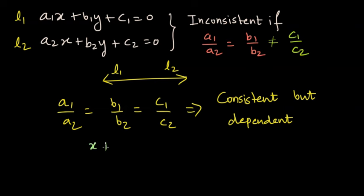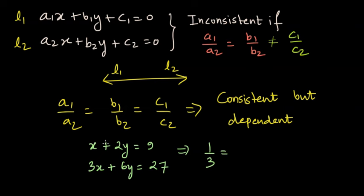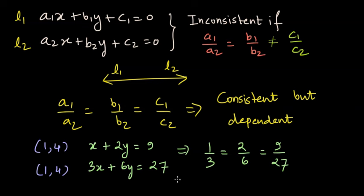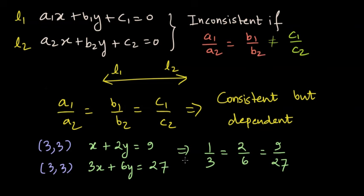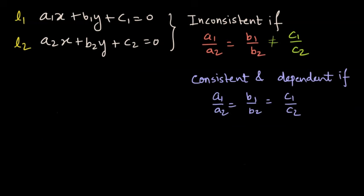For example, if one line is x plus 2y equals 9 and the other is 3x plus 6y equals 27, then 1 by 3 equals 2 by 6 equals 9 by 27 — this is one and the same line. If we choose x equals 1 and y equals 4, the point (1, 4) satisfies both equations. Another point, (3, 3), also satisfies both lines. So there are more than one solution — in fact, all points on the line are solutions. The two given lines are consistent and dependent when all three ratios are equal.